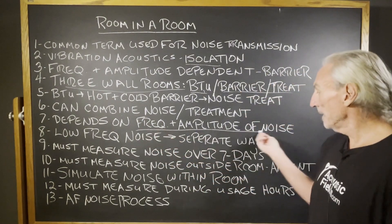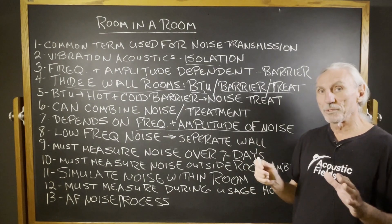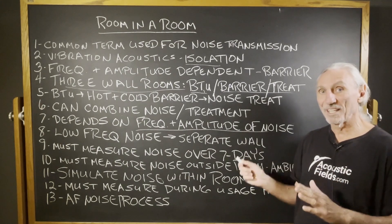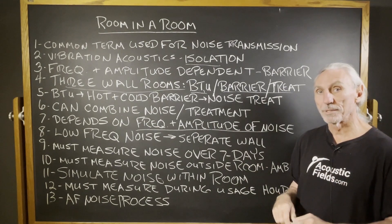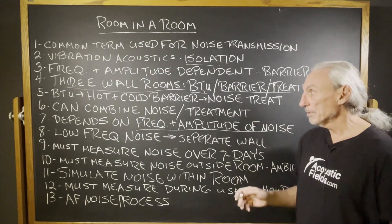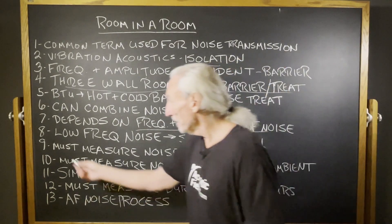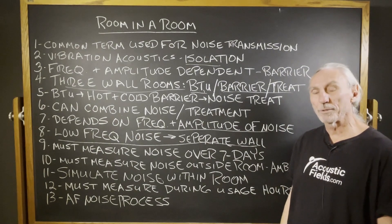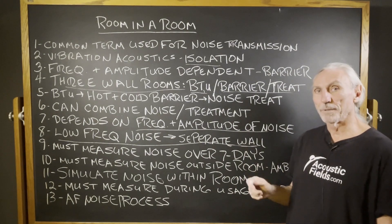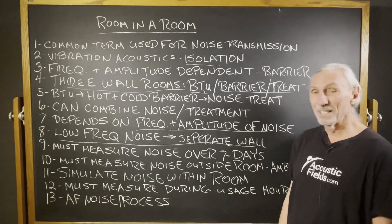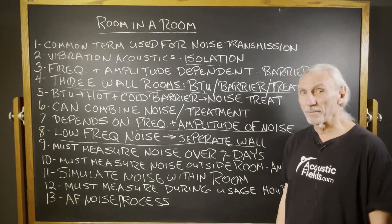We have to look at the frequency and amplitude of the noise. For noise below 125 Hz versus above 125 Hz: the barrier for noise below 125 can be twice as thick and contain two to three times more materials because of the low frequency aspect. So you have to measure three times, build once. Measure during the time of day when things are going to be used. Low frequency noise always requires a separate wall. In over 40 years, building hundreds of barriers where low frequency noise was involved, I can't think of one where we combined it with the BTU wall.